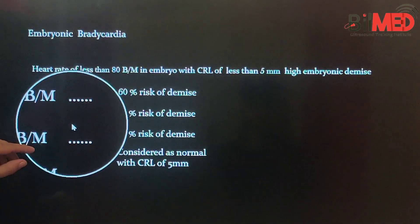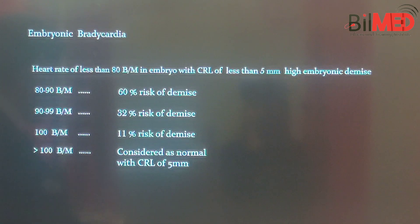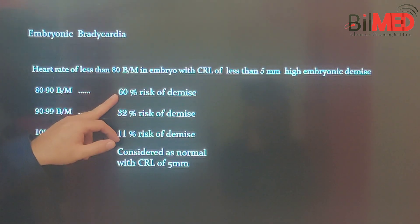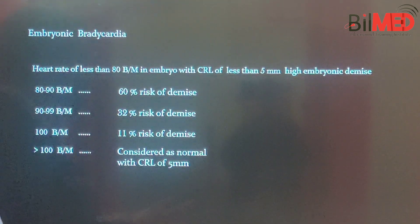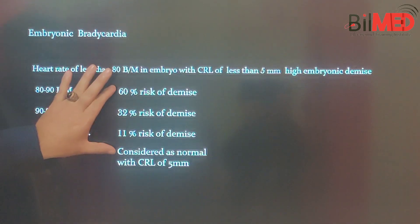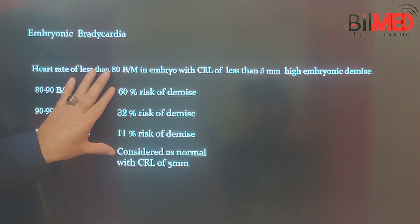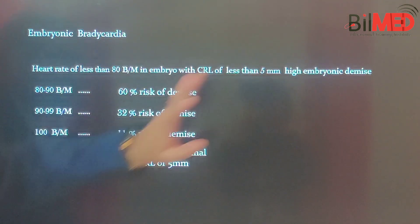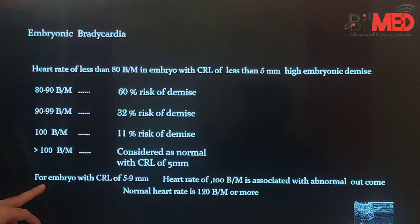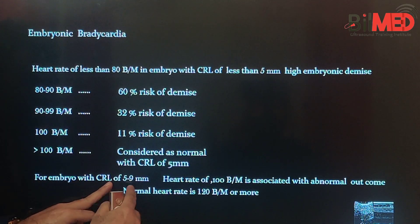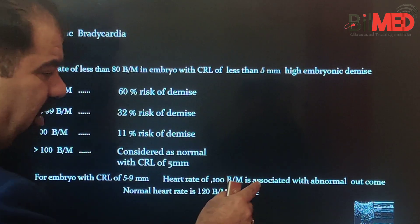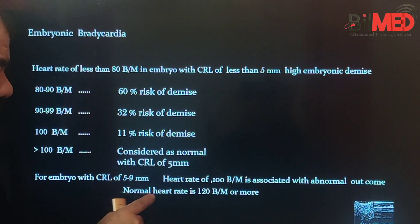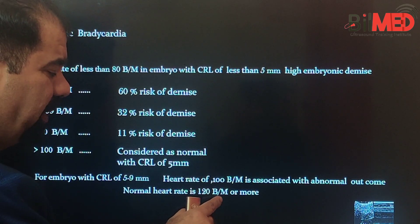As the fetal heart rate drops, the risk of demise increases. Always correlate it with CRL — not only label that the fetal heart rate is a certain number, but assess what it means. You can mention the risk of fetal demise. Keep in mind this is true for CRL less than 5 millimeters. When CRL is in the bracket of 5 to 9 millimeters, a heart rate of 100 is associated with an abnormal outcome — the normal heart rate should be more than 120 beats per minute.